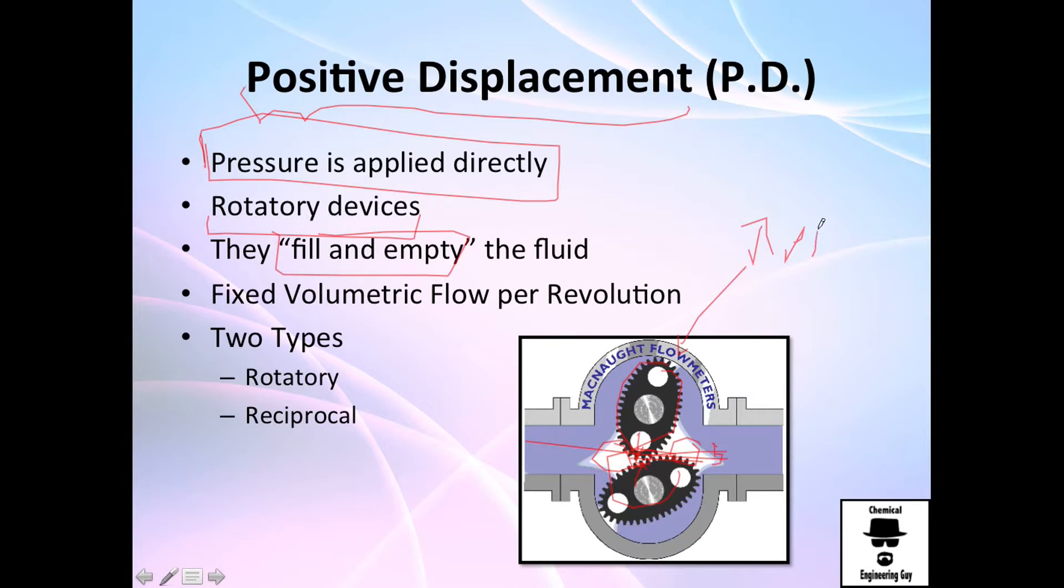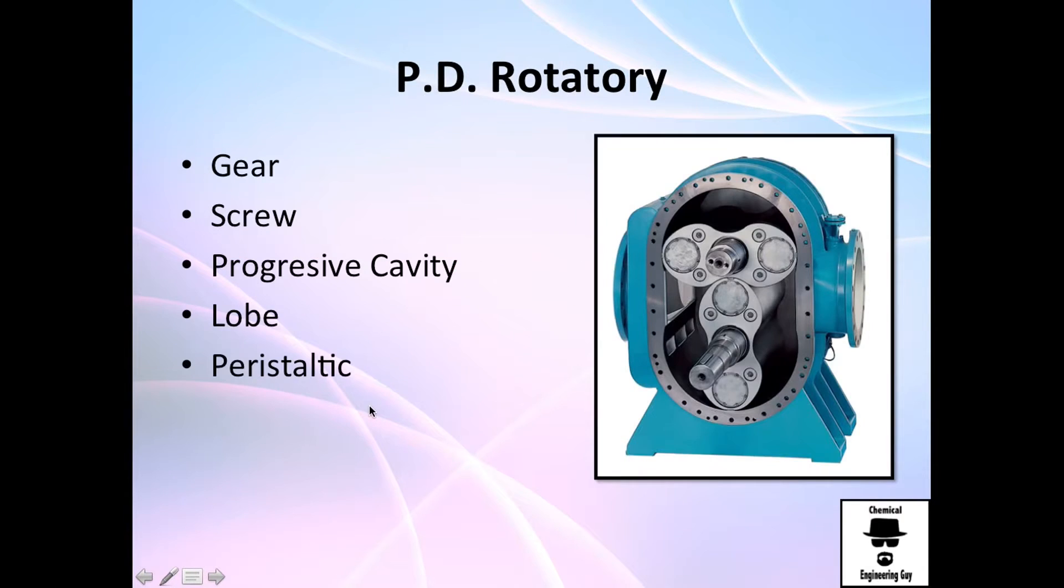We have essentially two types: rotatory and reciprocal, which we're going to check.